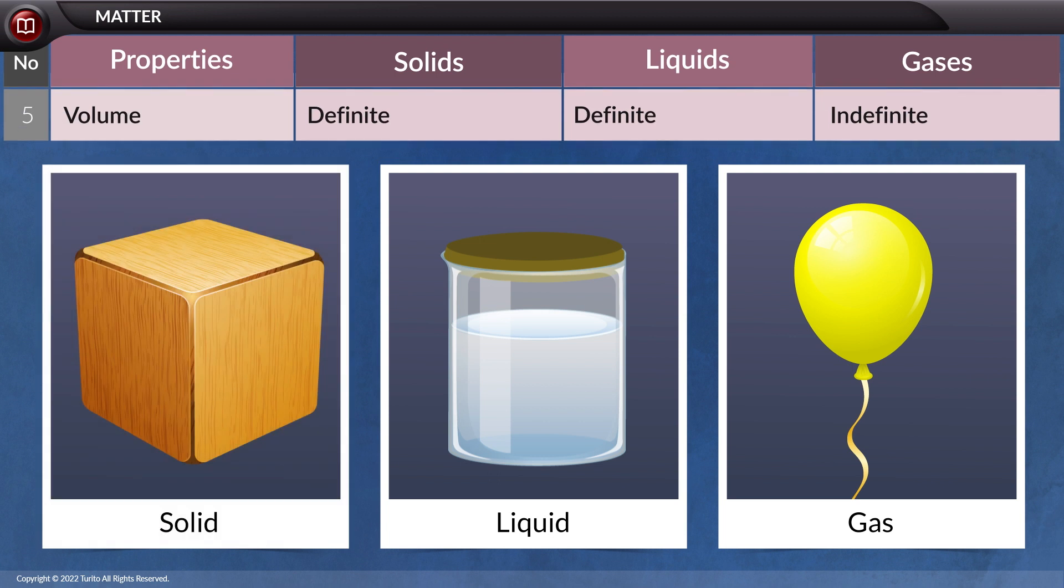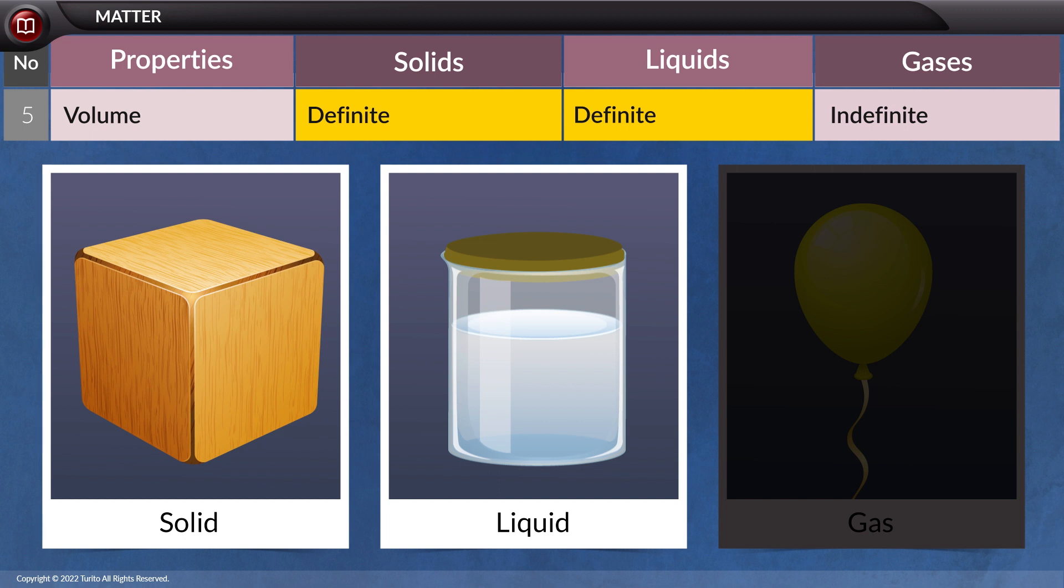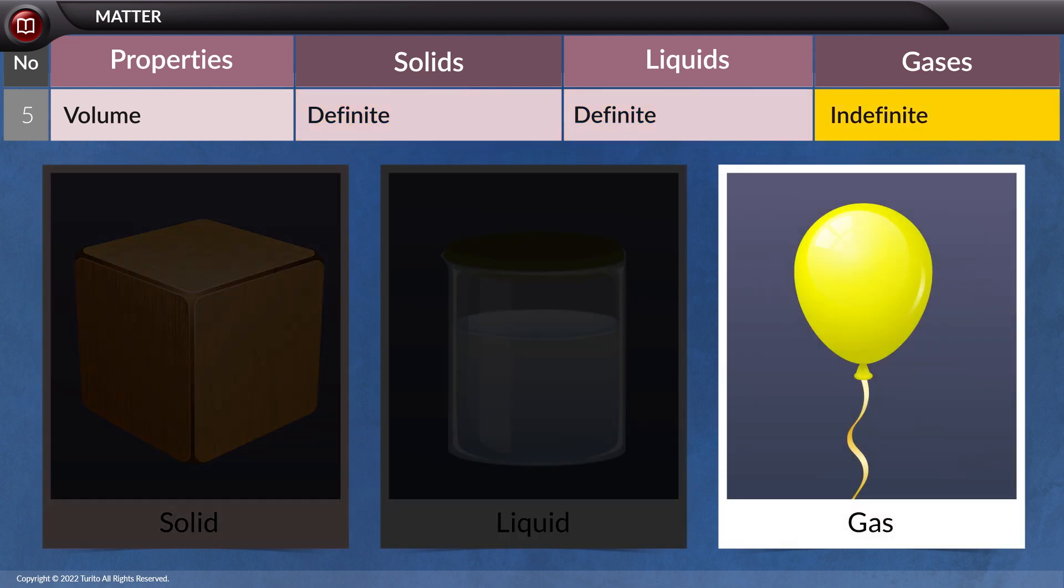The volume is the next property on the list. Solids and liquids, as you may know, have a defined volume. When it comes to gas, there is no such thing as a precise volume. They will take over the entire area surrounding them.